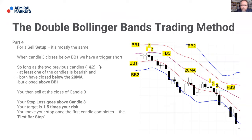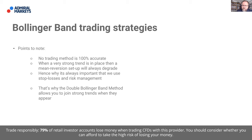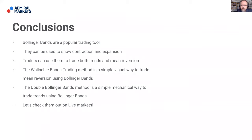Points to note: no trading method is 100% accurate. When a very strong trend is in place, a mean reversion setup will always degrade and never work as well as you'd hope - hence the importance of stop losses and risk management. That's also why the Double Bollinger Band method allows you to join strong trends when they appear. You've got two complementary strategies to help you with whatever environment the market is in.